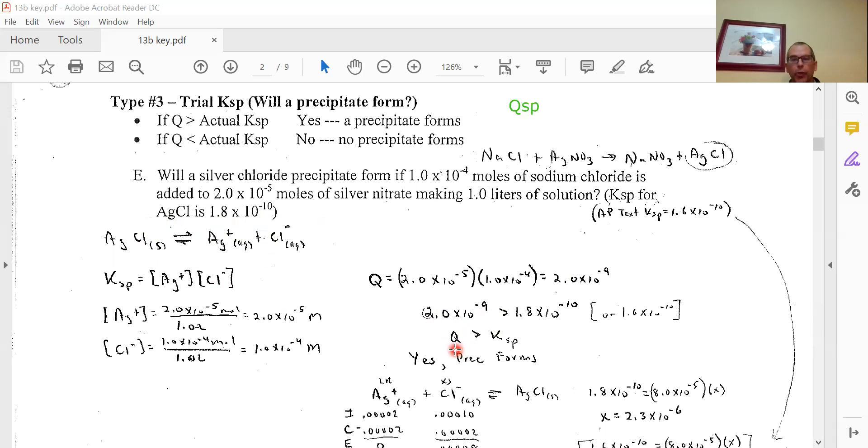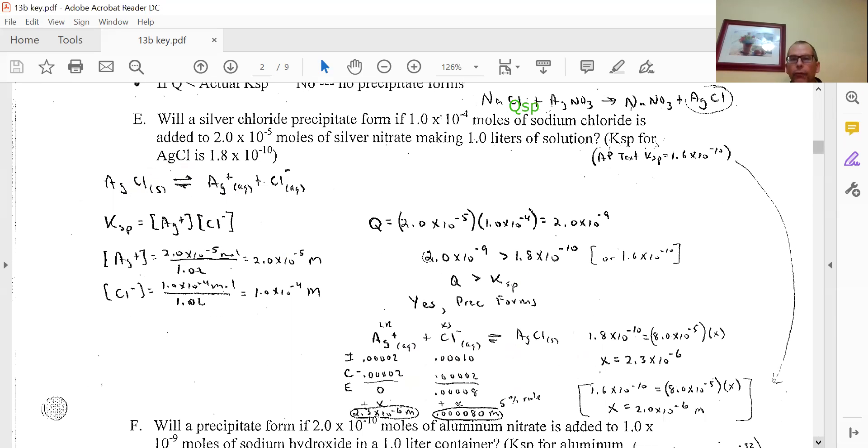So again, if Q is bigger than K, some products convert to reactants, it shifts left, forming solid. Yes, a precipitate will form. This other part is a Type 3B problem - don't worry about that for now. We'll see that in a week or so.